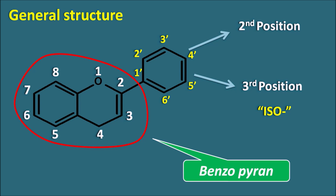Other modifications include saturation of the double bond between the second and third carbon, introduction of a ketone or OH group at the fourth position, and substitution of OH groups at different positions on the phenyl rings. By all of these modifications we get many types of flavonoids present in various plants. Today let us discuss the chemistry of flavonoids and how to remember them easily.